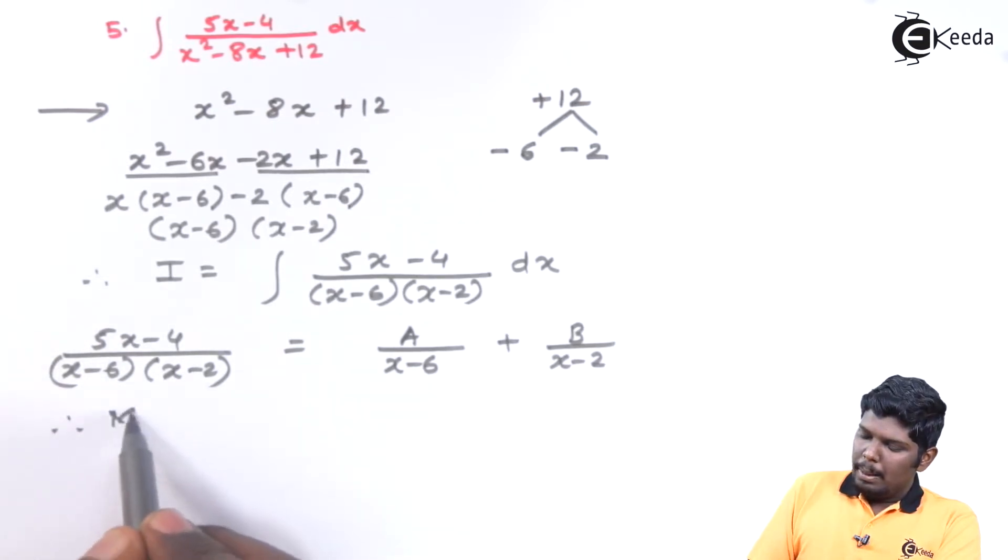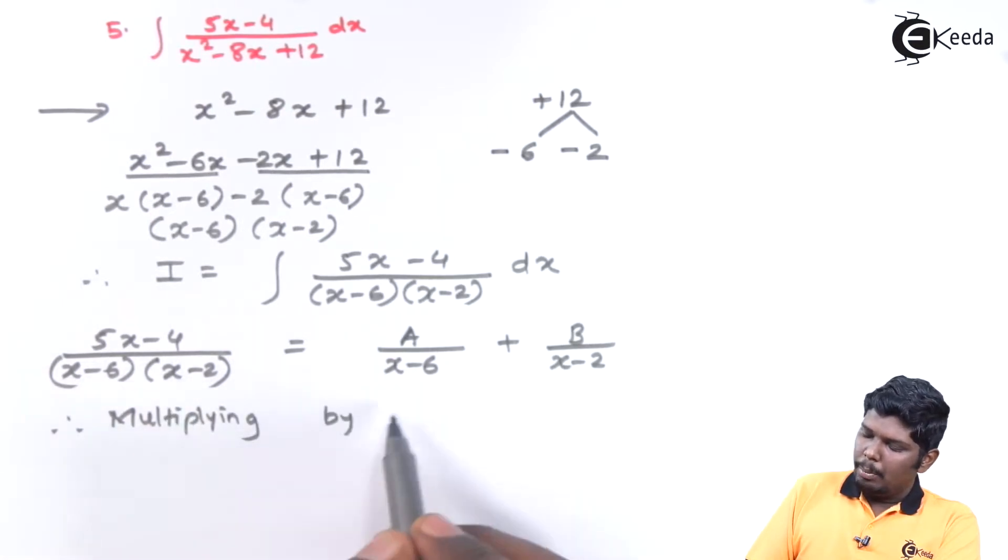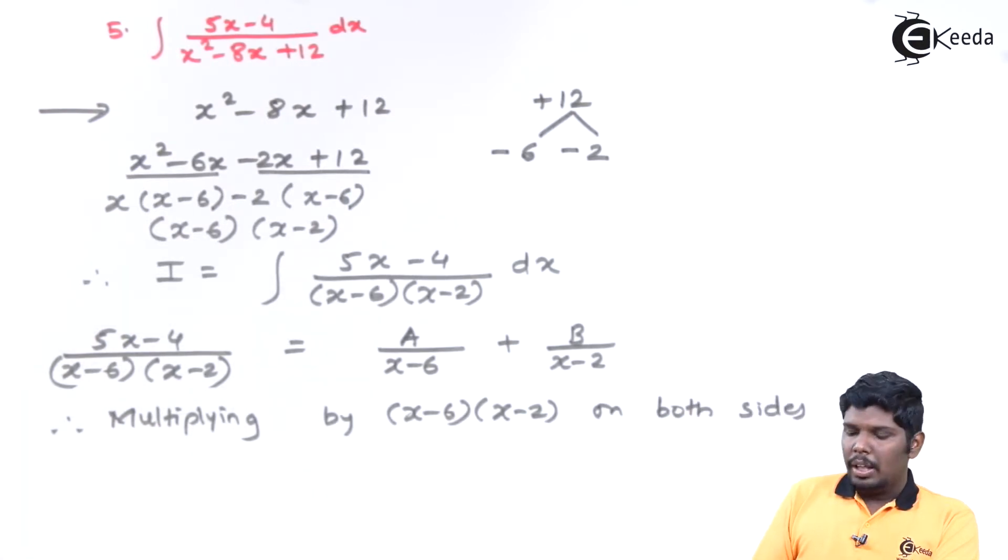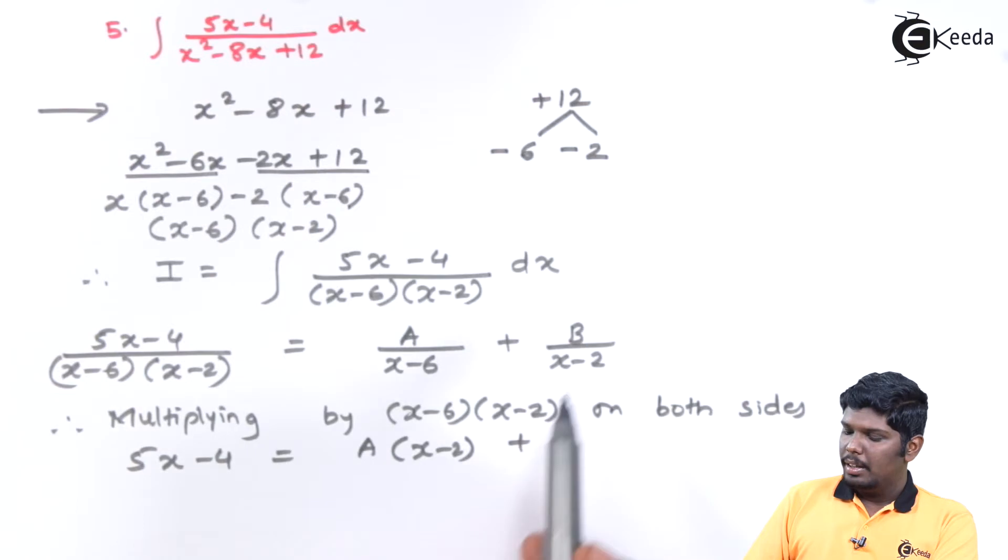Now multiply by the denominator that is x minus 6 into x minus 2 on both sides. On the left hand side this will directly give you the numerator that is 5x minus 4. On the right hand side the missing term with a is x minus 2 plus b, the missing term with b is x minus 6.